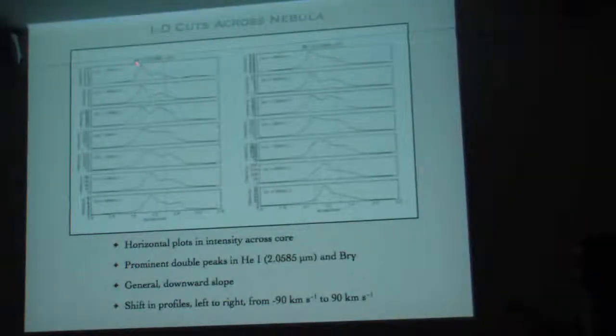So it looks like the torus, the peaks shift. So you can see at minus 90 kilometers per second, the peak's to the left, which is to the east, plus 90 kilometers per second.